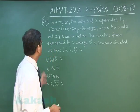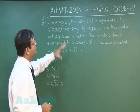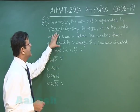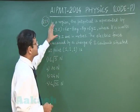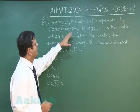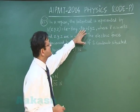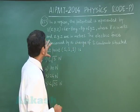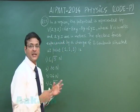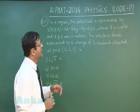Now, in this question 25 as it reads, in a region the potential is represented by V(x,y,z). Potential as a function of xyz has been given to you like this: 6x - 8xy - 8y + 6yz, where V is in volts and x,y,z are in meters. They are standard units given.